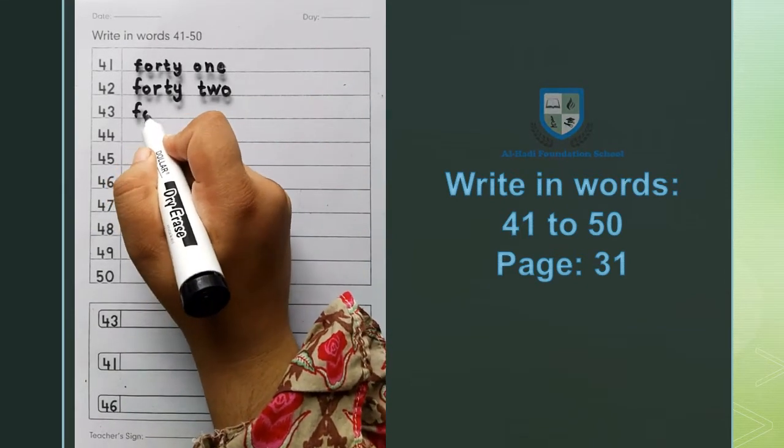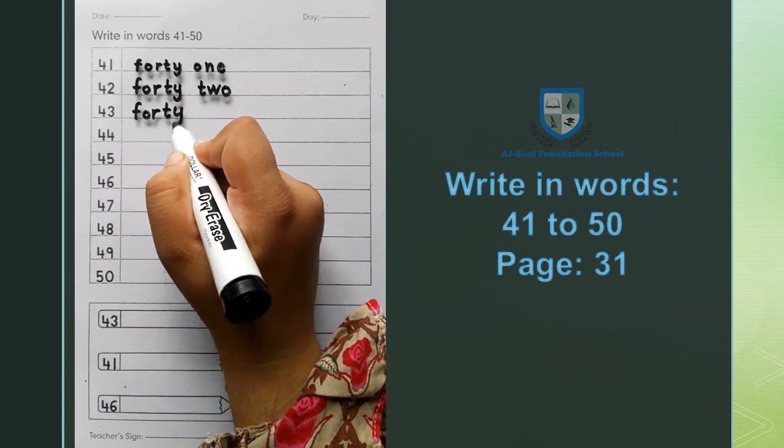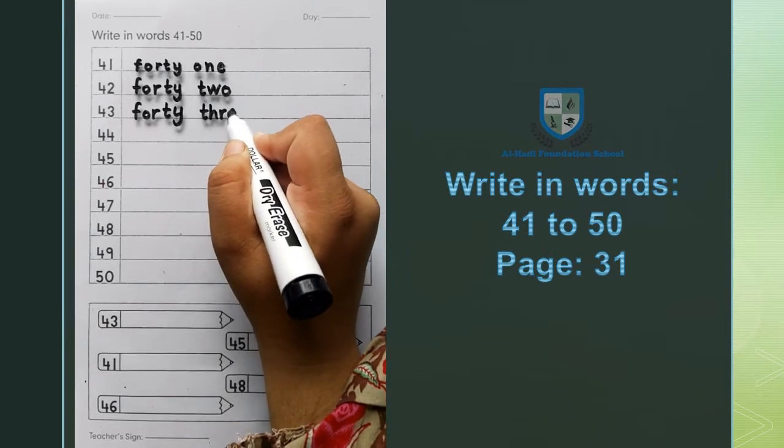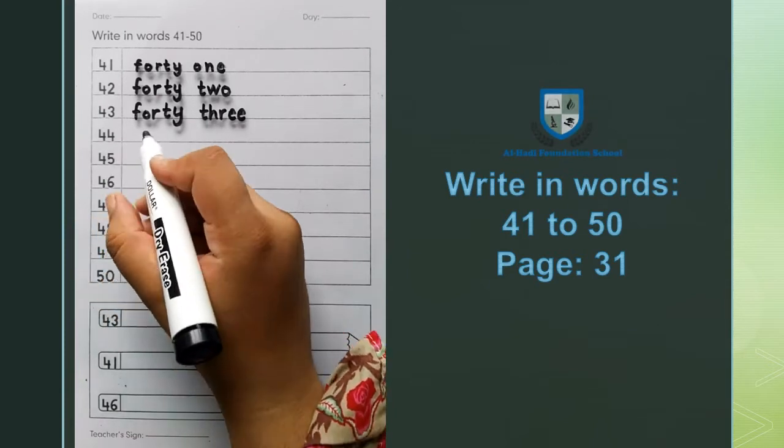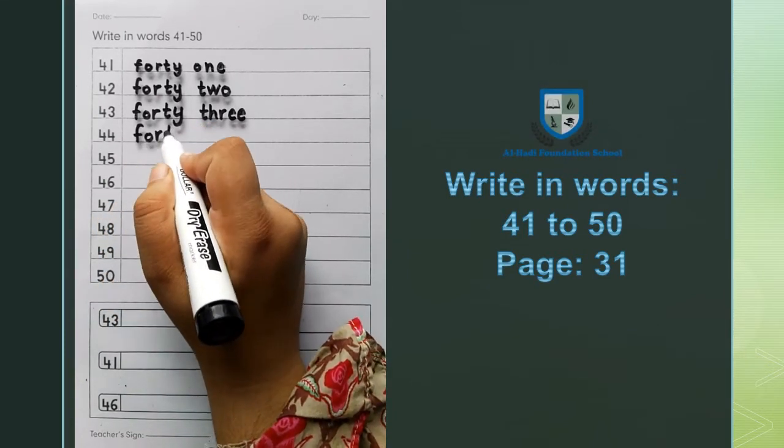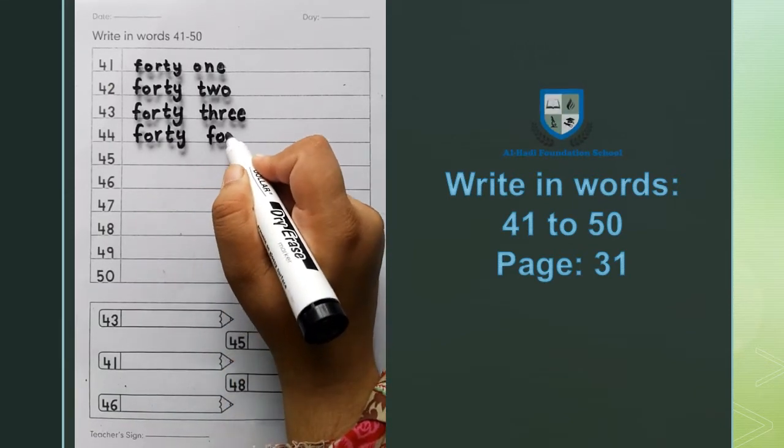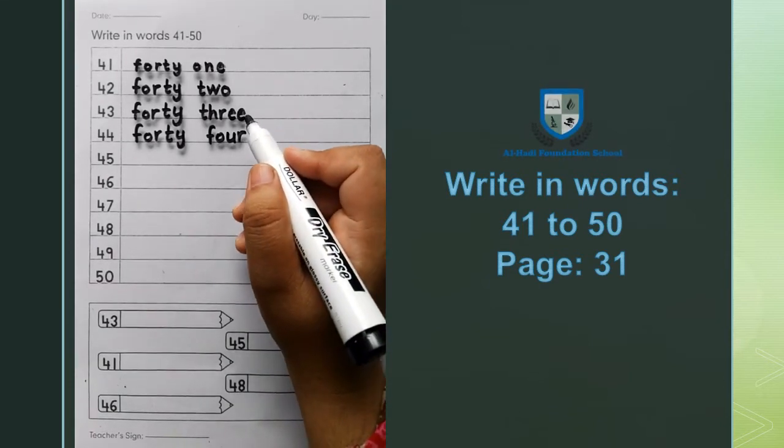43: F O R T Y, forty, T H R double E, three, forty three. Next 44: F O R T Y, forty, F O U R, four, forty four. Next 45.